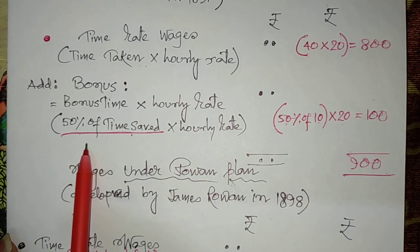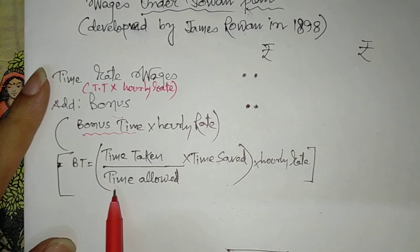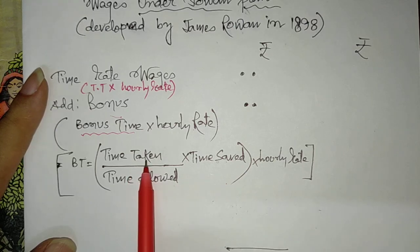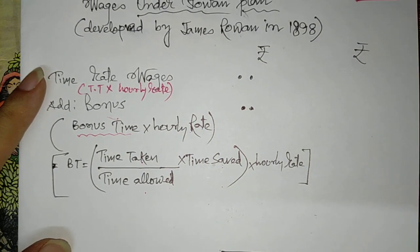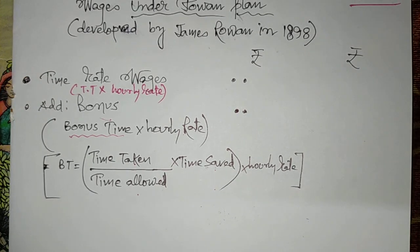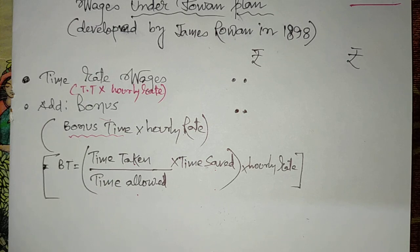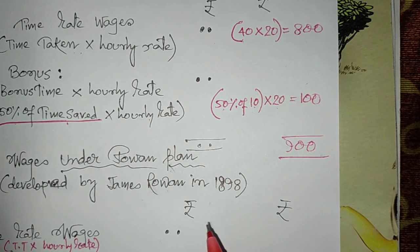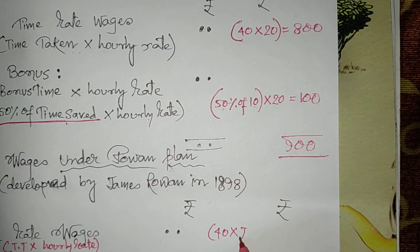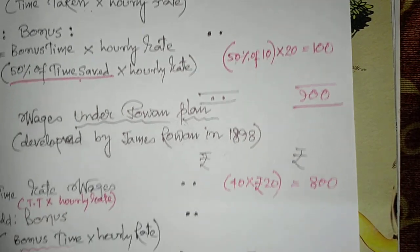Under the Halsey plan, bonus time was 50% of time saved. But under the Rowan plan, bonus time is computed as: (time taken ÷ time allowed) × time saved. The bonus formula remains: bonus time × hourly rate. Using the same example — time taken 40 hours, time allowed 50 hours, time saved 10 hours, hourly rate Rs. 20 — time rate wages remain Rs. 800.